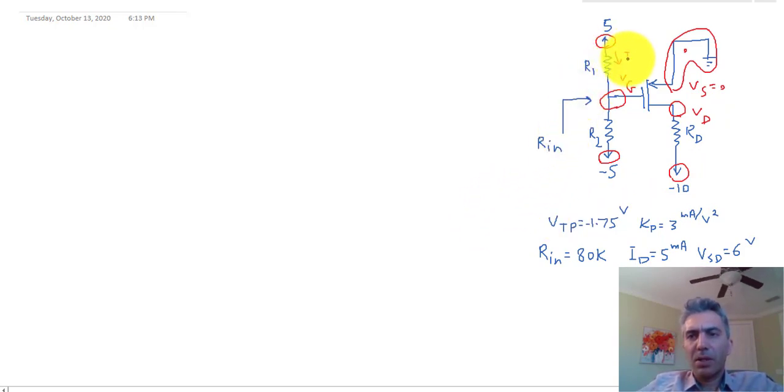Then we have a current I1 here, and this is the only current that is passing through this branch of the circuit because the current going into the gate is 0. And then finally there is one current Id both for the source and the drain obviously.